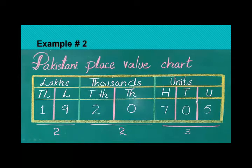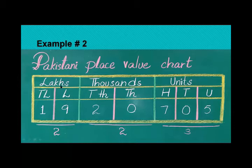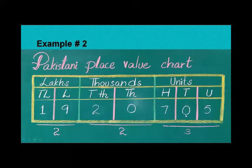Starting from the right, the first group is units — units, tens, hundreds. Then comma. The second group is thousands — 1,000 and 10,000. Then comma. The third group is lakhs — lakhs and 10 lakhs. For seven-digit numbers, the seventh digit is placed under 10 lakhs. Groups are 3, 2, 2.